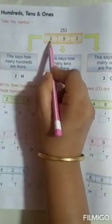Take the number 253. It is written in this way. This says how many 100s are there. How many 100s? 2.